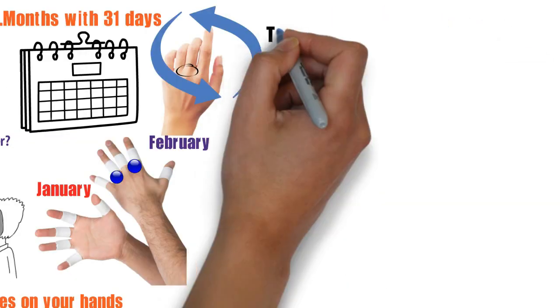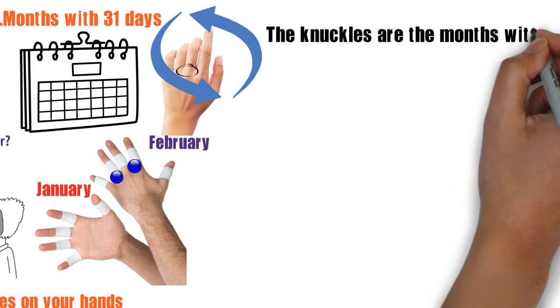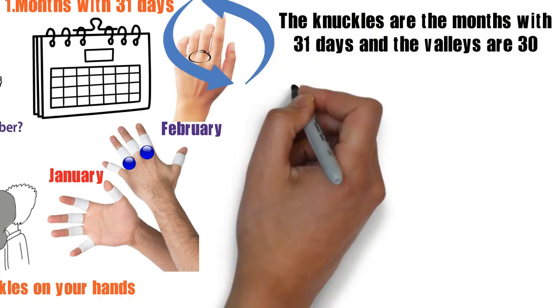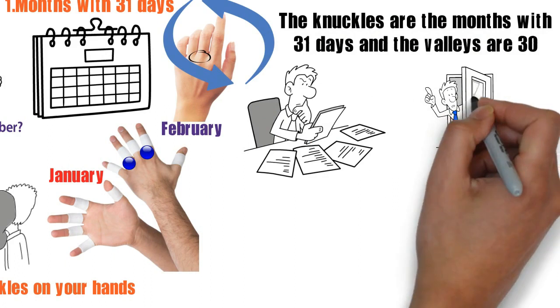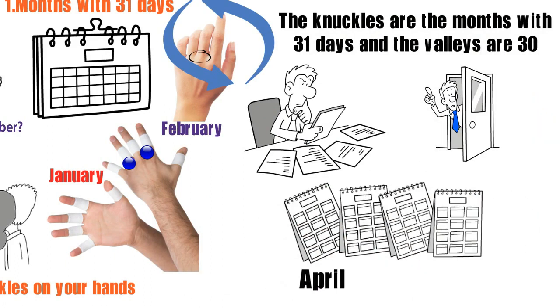between knuckles and valleys. The knuckles are the months with 31 days and the valleys are 30. If that's a little complicated, you can go with the saying: '30 days have April, June, September, and November. All the rest have 31 days, with February being an exception.'